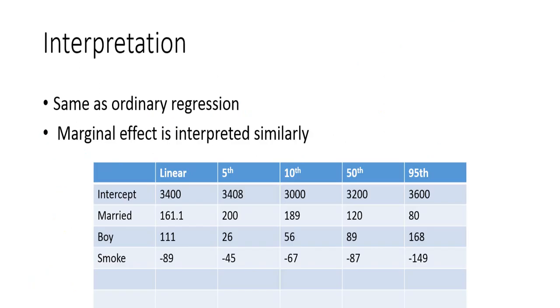So how do we interpret the coefficient that comes out from the quantile regression? That's important to learn here. It's very similar to what we do in ordinary regression. Marginal effect is interpreted similarly. That means if beta value or beta one is, let's say 0.3, then we say that the dependent variable goes up by 0.3 every time this particular variable goes up by one, even when other variables are constant.